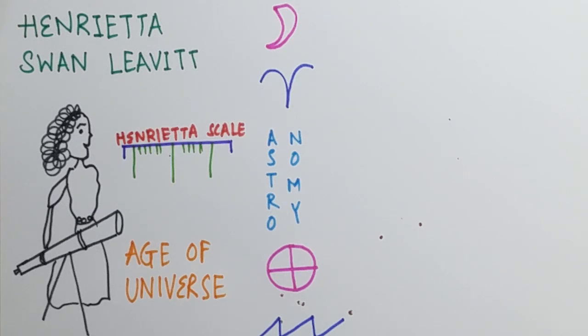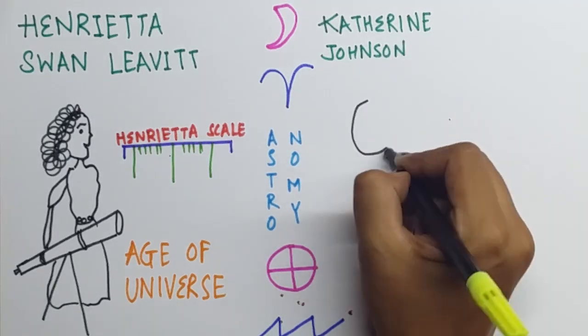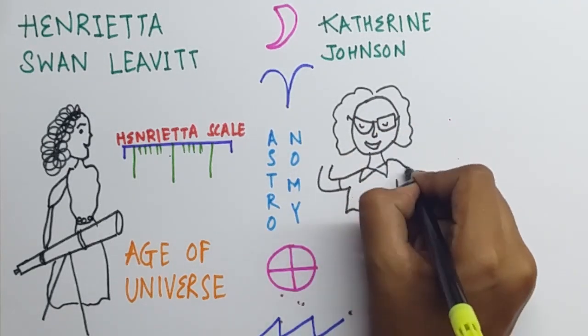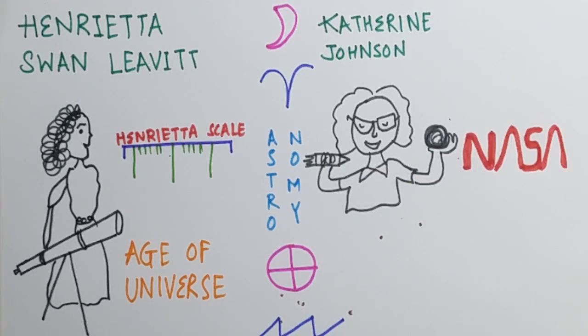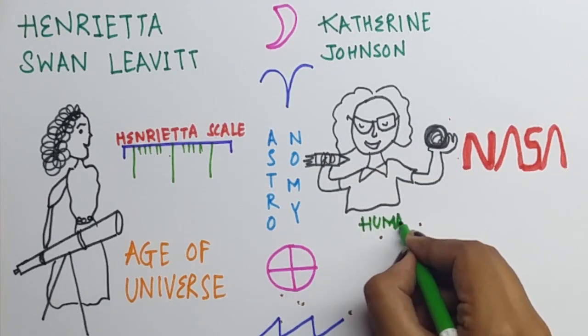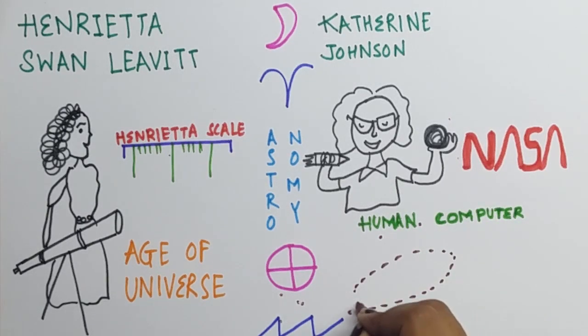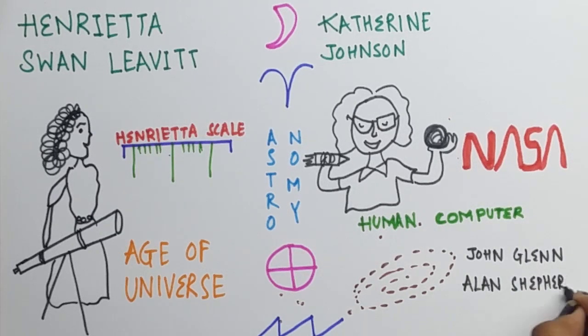You must have definitely heard of Katherine Johnson. Katherine Johnson is an African-American mathematician as well as astronomer whose calculations of orbital mechanics as a NASA employee were critical to the success of the first and subsequent US manned space flights. She was often given the nickname of a human computer because she earned the reputation for mastering complex manual calculations.